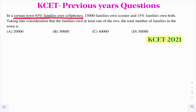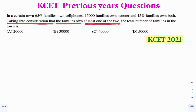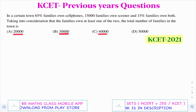15,000 families own a scooter - observe this is not in percentages. And 15% of families own both, meaning 15% of families have a scooter as well as a cell phone. Taking into consideration that families own at least one of the two - meaning any family in that town has at least a cell phone or scooter - what is the total number of families in the town?